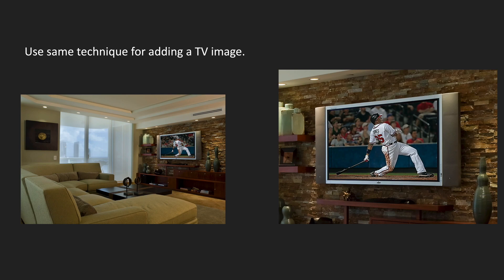You can use the same technique for adding an image to a TV screen. If you've taken photographs with the TV on, you know it's either blurry or way overexposed. So when I take photographs and there's a TV in the room, I turn the TV off, knowing that in post-production I'm going to add an image. This was the interior of a famous ball player, and I went to their site, found a free-to-use image of the same ball player, and put it in his TV.